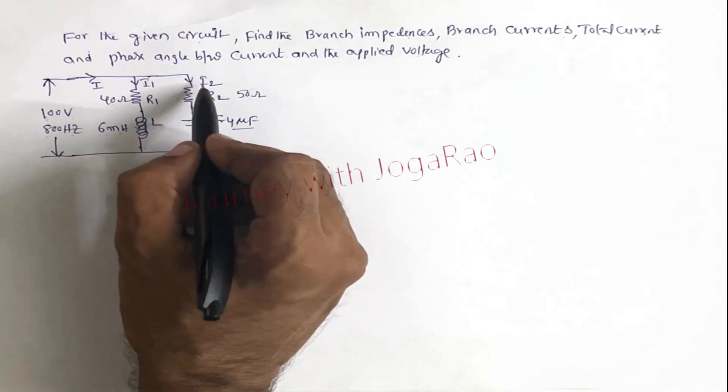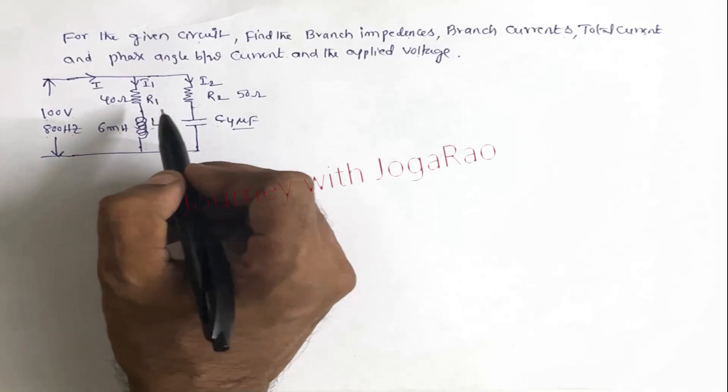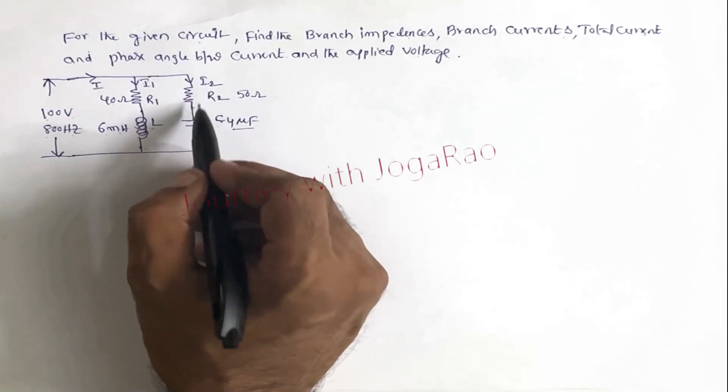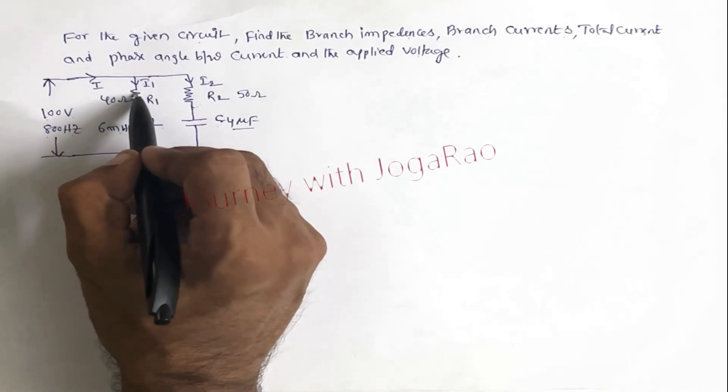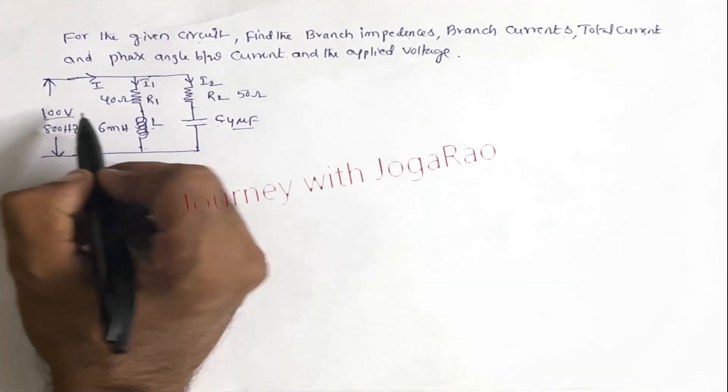Here resistance R1 is 40 ohms, inductance 6 millihenry. Similarly R2 is 50 ohms and capacitor 4 microfarad. So this is branch current I1, and this is branch current I2. So R1 and L are in series, R2 and capacitor C are in series. These branches, branch 1 and branch 2 are connected in parallel and 100 volts is applied.